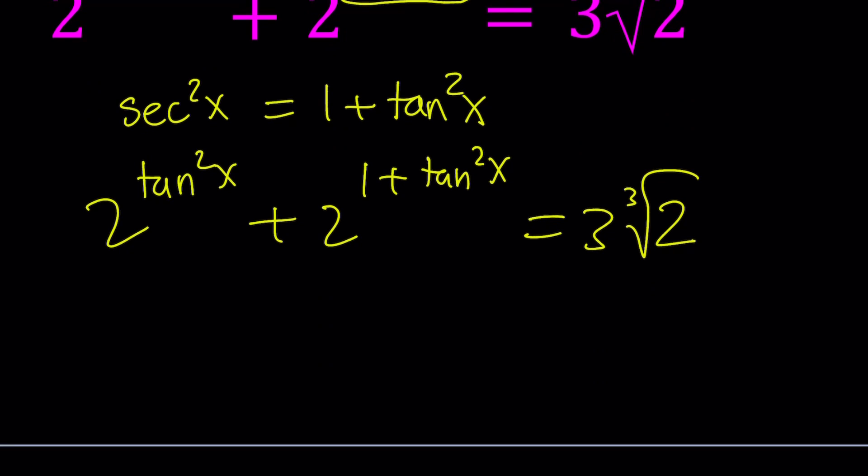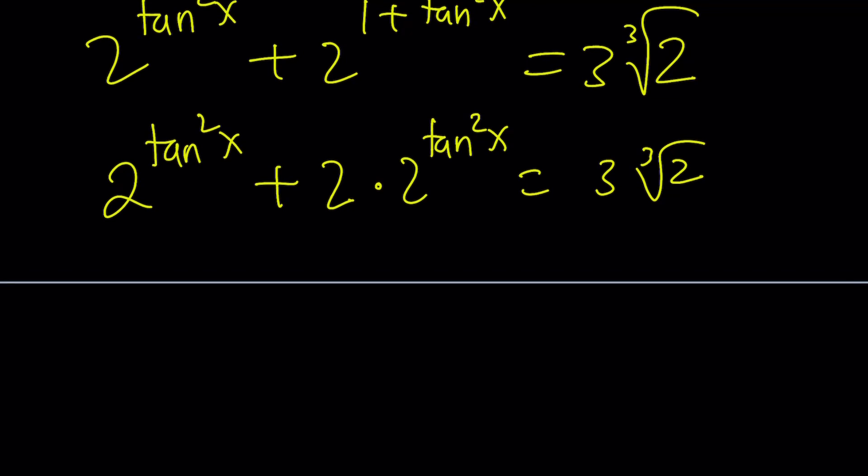Now here's what we're going to do. We're going to go ahead and split up the exponents here. We can write this as 2 to the power tangent squared x plus 2 to the first power times 2 to the power tangent squared x. So now we can keep the right hand side as is. And now notice that I'm kind of looking at the same expression. 1 apple plus 2 apples, that's going to make 3 apples. So I have 3 times 2 to the power tangent squared x here.